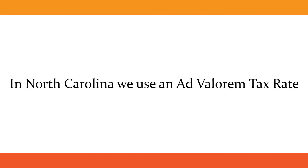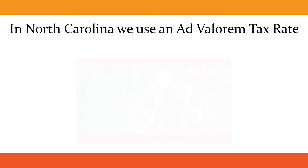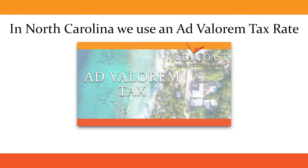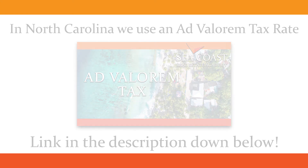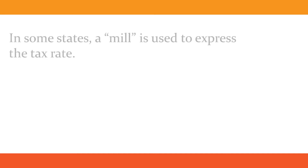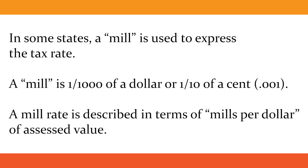In North Carolina, we use an ad valorem tax rate. In some states, a mill is used to express the tax rate. A mill is one one-thousandth of a dollar, or one-tenth of a cent. A mill rate is described in terms of mills per dollar of assessed value.